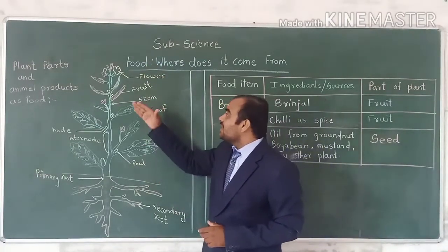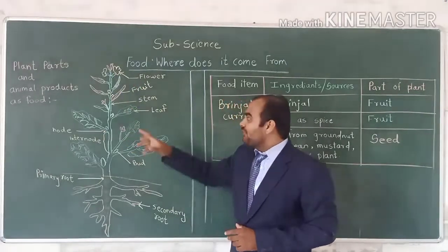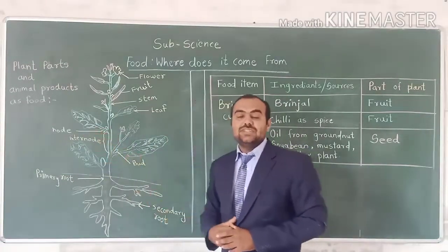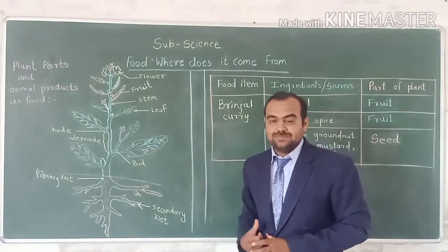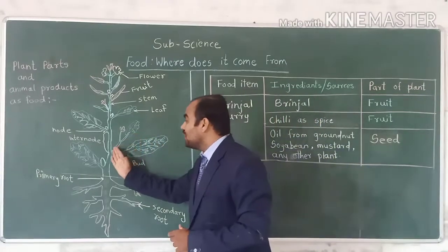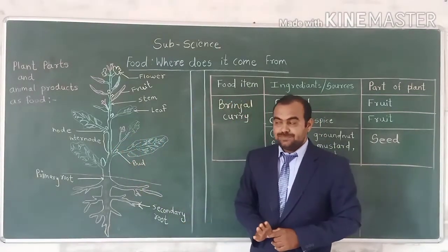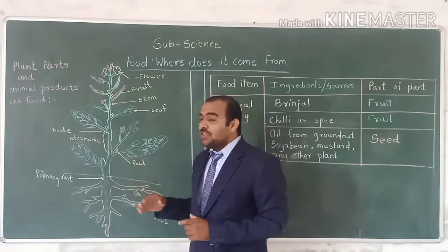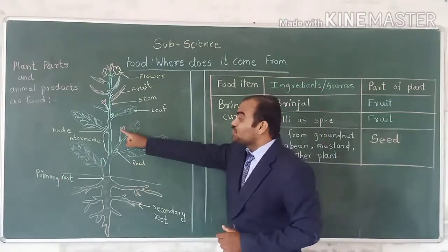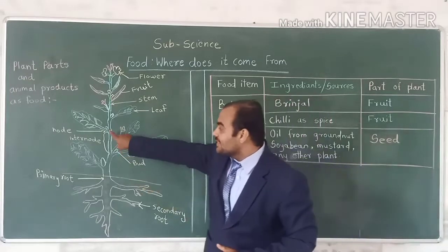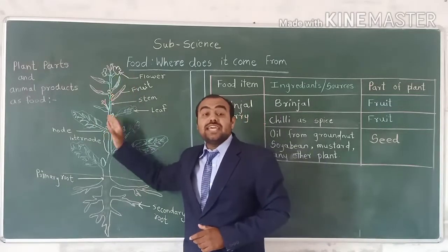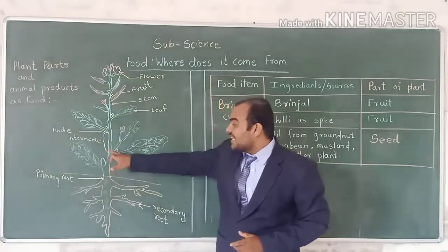The shoot system of the plant includes flowers, fruits, stem, leaf, node, internode, and bud. A bud means the sprout which is coming out of the stem — this is called a bud. A node means where a branch or leaves are attached to the stem. Here the new branch or leaves are attached to the stem, so that point is a node, and here is another node.